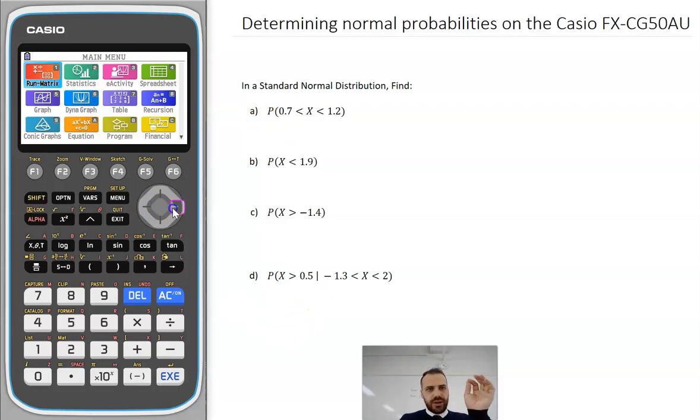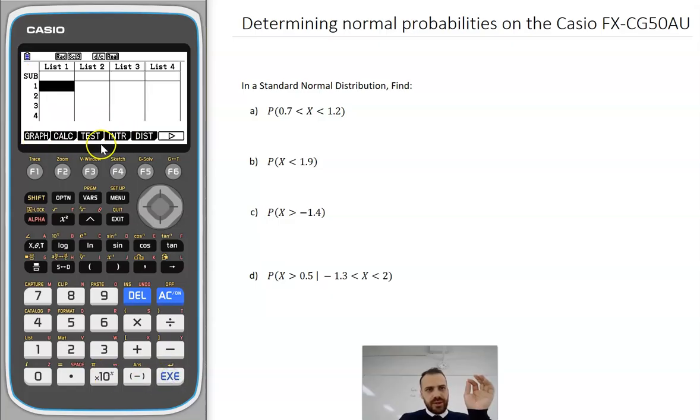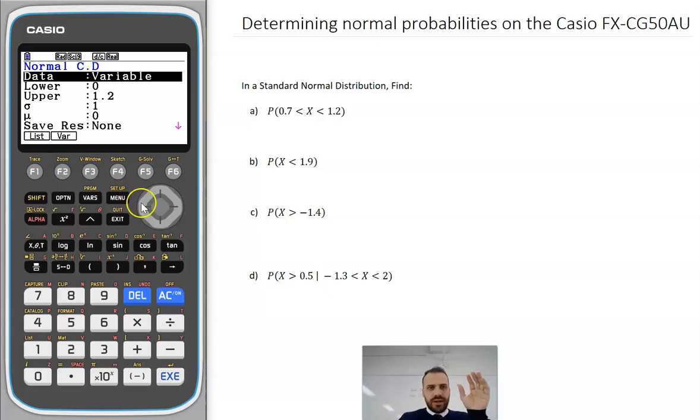The way that we're going to do it, we're going to go to our stats mode right there, and then we're going to go to distribution. You can see the binomial sitting there, we've used that before. We're going to use the normal one, NCD. We don't really have a use for NPD.